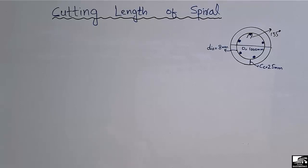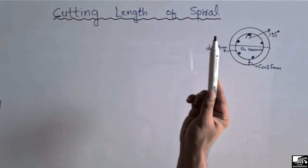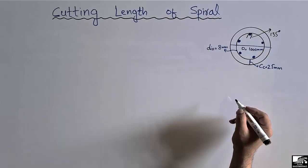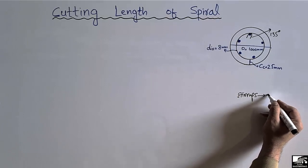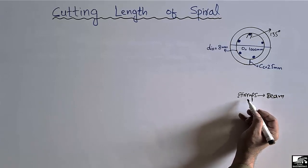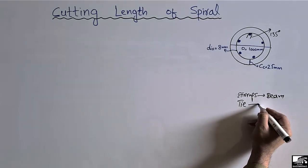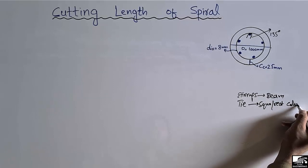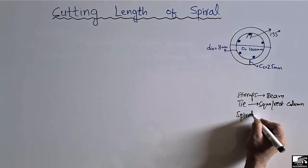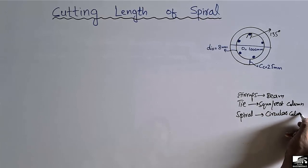Welcome back to the civil engineering YouTube channel. Today we are going to find out the cutting length of a spiral. Spiral is the technical term used for transverse reinforcement in a circular column. For beams, transverse reinforcement is known as stirrups; for rectangular or square columns it is known as ties; and for circular columns it is known as the spiral.